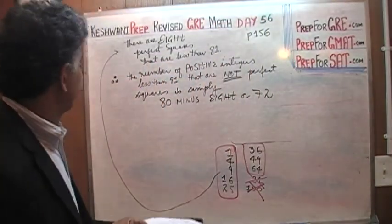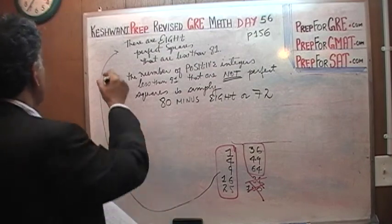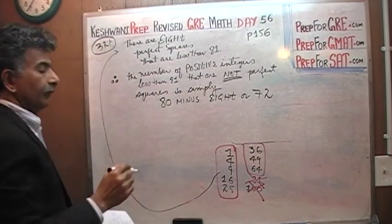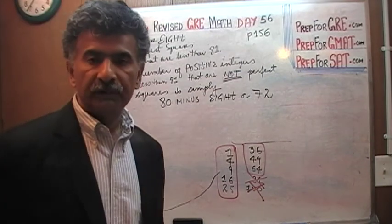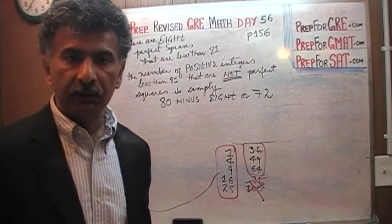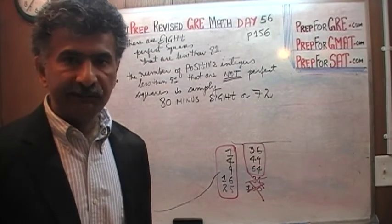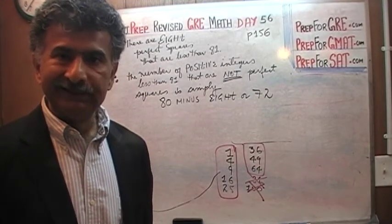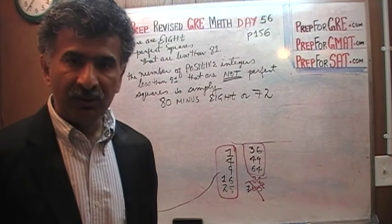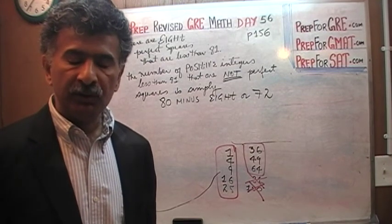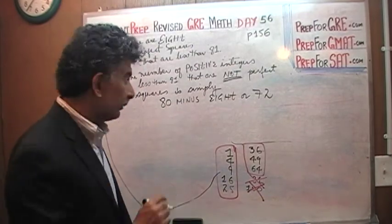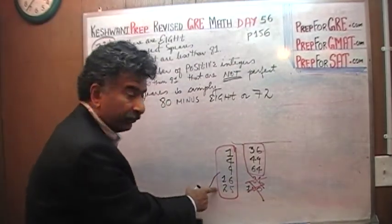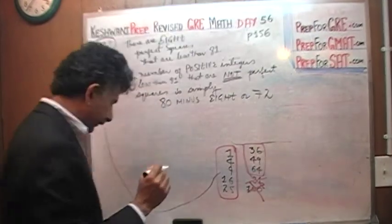The reason why only 32% of the people who took the exam got this question right, and the other 68% missed it, is not because it involves complicated mathematics. There are two reasons: one is the wording — the very awkward way they phrase the question. The second reason is this: it is 80 minus 8.